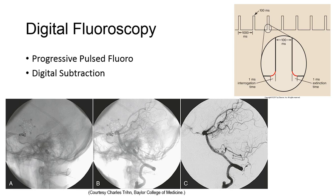Newer units have the ability of combining this mode with high MA and spectral filters made of copper or a copper-aluminum alloy to produce a higher image quality while limiting patient exposure. MA stations as high as 200 or 300 MA are possible, creating increased image quality, but also with the potential to produce some excessive patient exposure.